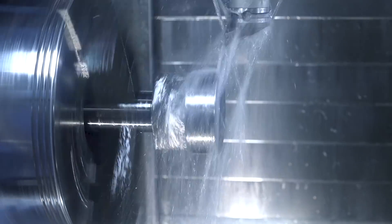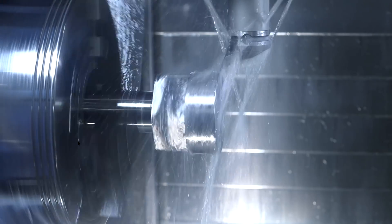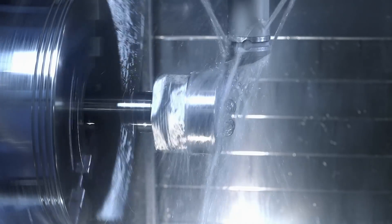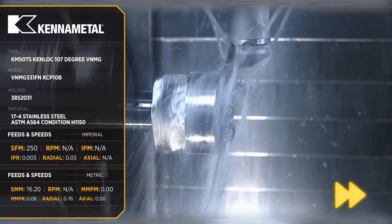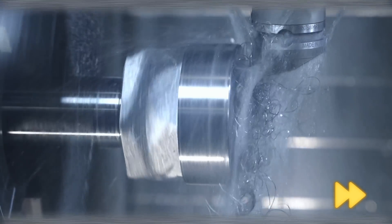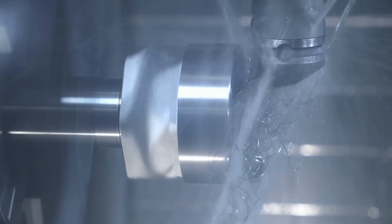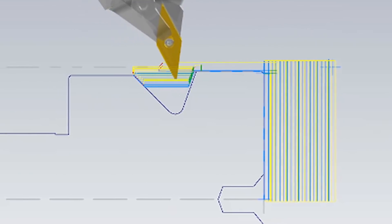The next tool is the same VNMG 431 and this tool is going to face the part and then we're going to do some trick OD roughing with this tool. We're going to run it at 250 SFM with a feed rate of 3 thousandths per revolution. For the undercut that we're going to be doing I'm going to be taking it in 30 thousandths passes.